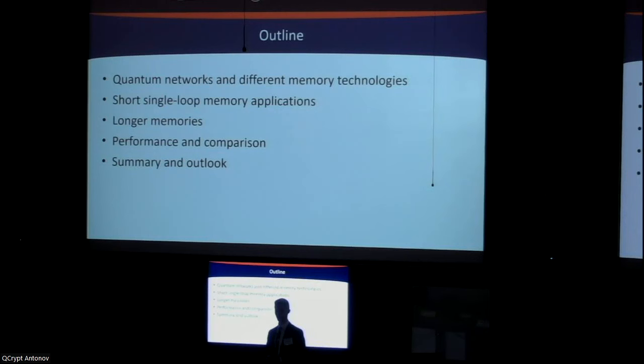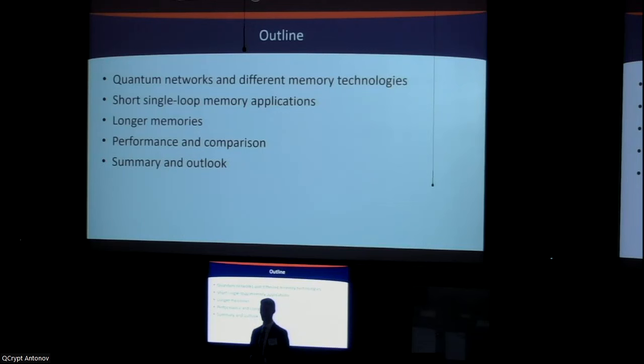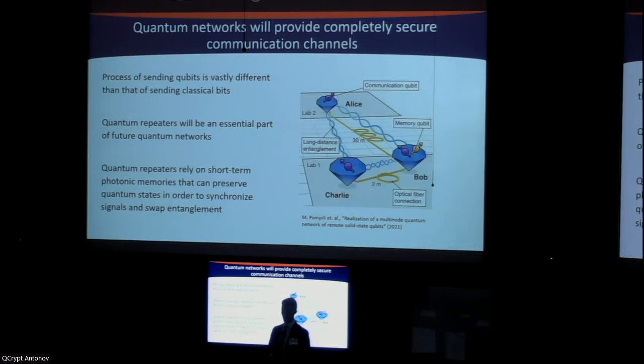Here's a brief outline of what I'll be talking about. First, I'll discuss quantum networks and how they can benefit from quantum memories, and the different types of quantum memories that are out there. This is a pretty experimental talk, so I'll cover relevant experimental details when needed. Then I'll talk about our short single-loop memory and its applications, longer memories we've developed, performance comparisons to state-of-the-art technologies, and finally a summary and outlook.